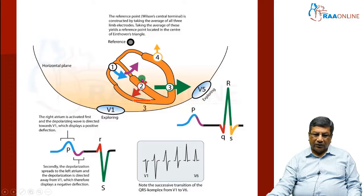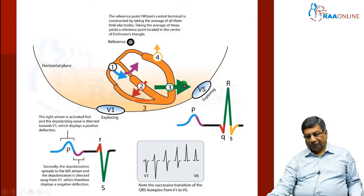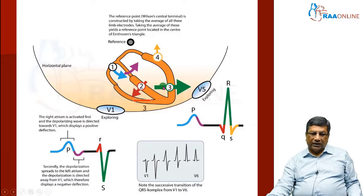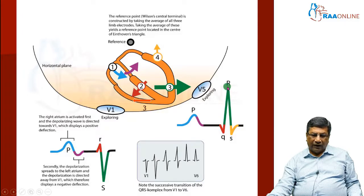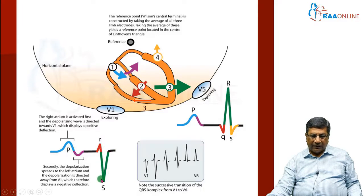Then through the intact right bundle and left bundle, there is a simultaneous activation of right and left ventricle. But because of the dominance of the left ventricle, the net ventricular depolarization is likely to travel towards left. Because of the larger muscle mass, it will pull the resultant cardiac vector towards the left side. The left side leads like V5 and V6 will produce a tall R wave, and V1, being a right side lead with the net ventricular depolarization going away from it, will produce a predominantly negative QRS complex — the S wave. That's why V1 is predominantly negative and V5/V6 are predominantly positive in a normal ECG.